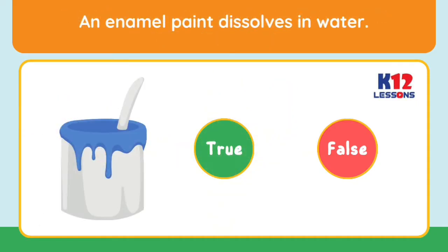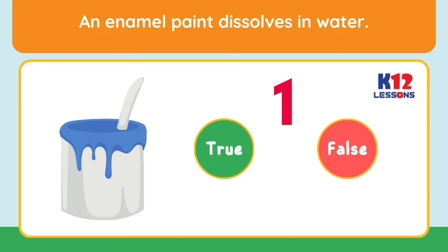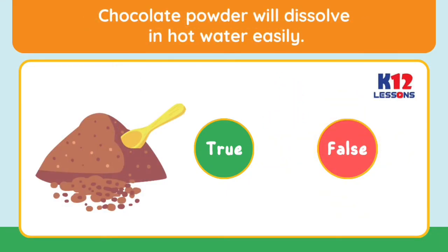An enamel paint dissolves in water. Chocolate powder will dissolve in hot water easily.